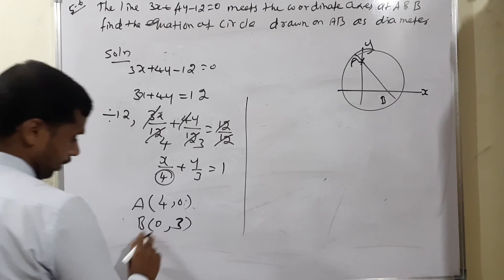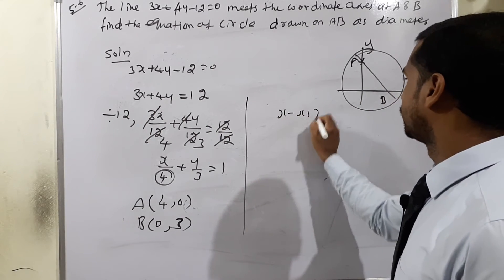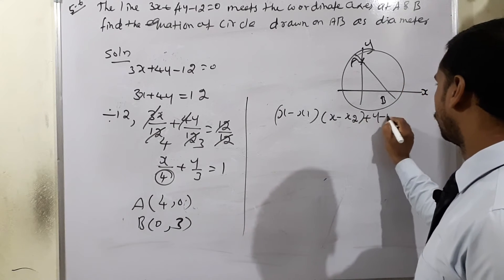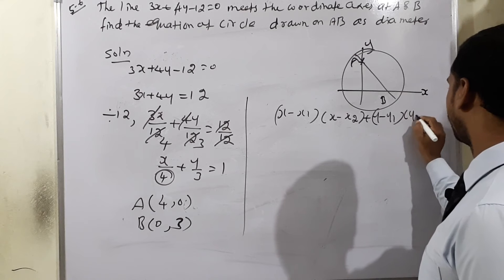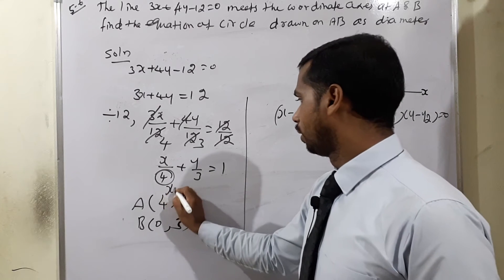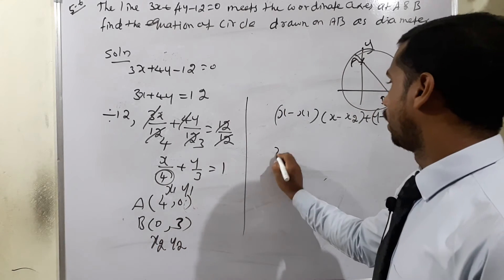Now, the two points are given, so the line segment formula is x minus x1 into x minus x2 plus y minus y1 into y minus y2 equals 0. So first point A is x1, y1 and point B is x2, y2.